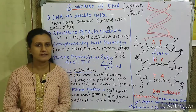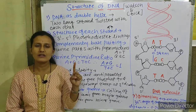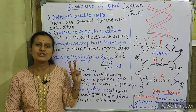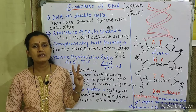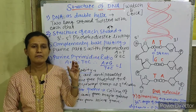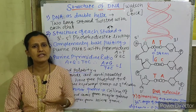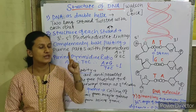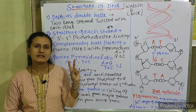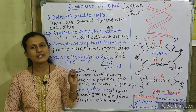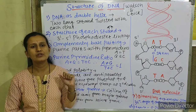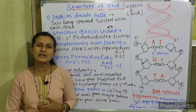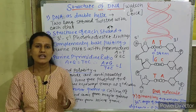DNA is made up of three main constituents. First, a pentose sugar — specifically deoxyribose sugar, with the formula C5H10O4. This has one less oxygen than ribose sugar. Ribose sugar, present in RNA, has the formula C5H10O5. Second, nitrogen bases: double-ring compounds called purines — adenine and guanine — and single-ring compounds called pyrimidines — cytosine and thymine. In RNA, uracil replaces thymine.